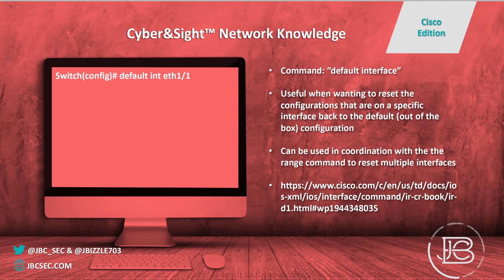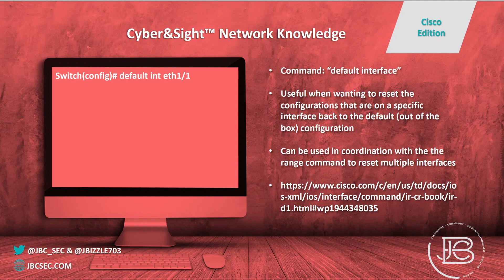The first tip and trick for Cisco configurations is the default interface command. You can put that on any interface, and it sets everything back to the original factory defaults — removing VLANs, switchport configurations, spanning tree configurations, all at once. It becomes even more beneficial when used together with the range command, which we're about to cover in tip number two.